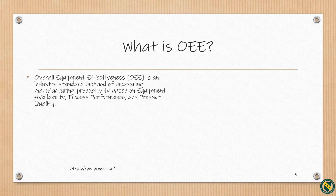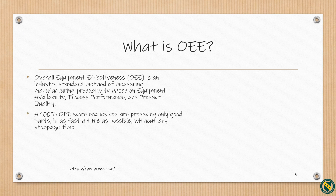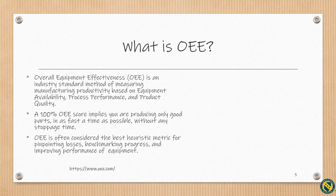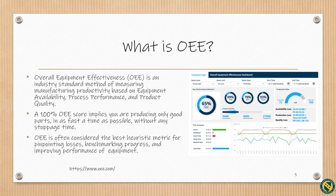Overall Equipment Effectiveness is an industry standard method of measuring manufacturing productivity based on equipment availability, process performance, and product quality. A 100% OEE score implies you are producing only good parts in as fast a time as possible without any stoppage time. OEE is often considered the best heuristic metric for pinpointing losses, benchmarking progress, and improving performance of equipment. Process dashboards like the one shown here can be used by process owners to display OEE scores and other key performance indicators, monitor process performance, identify improvement opportunities, and make adjustments to optimize output.